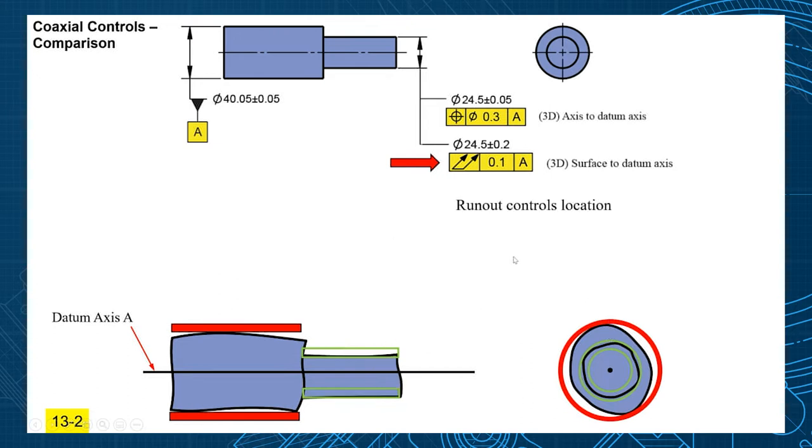So worst case, what could happen? This controls location. It could be shifted down or up. So you see how that surface could be shifted only within the 0.1 specification.